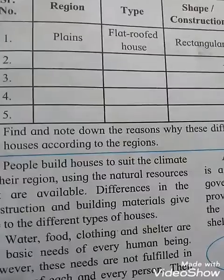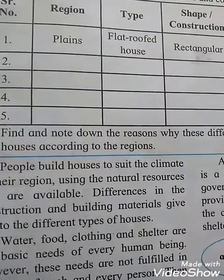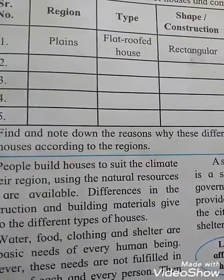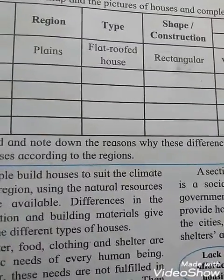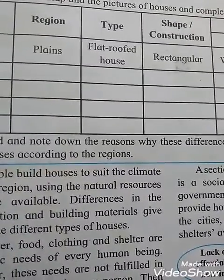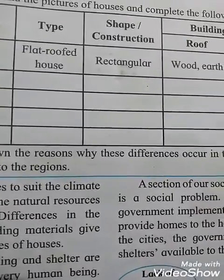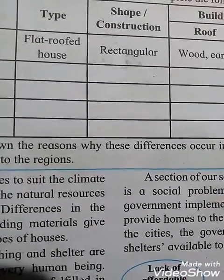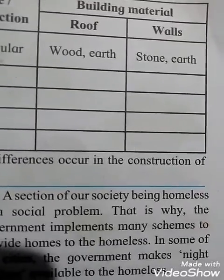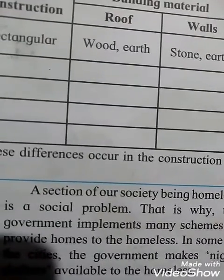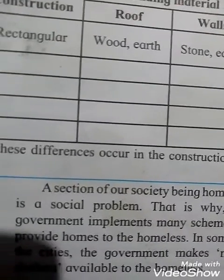For regions of low rainfall and desert, houses are made of stone and clay. The shape and construction is rectangular and square. The roof is leaves, sticks, or grass, and the wall can be stone, bricks, or clay.